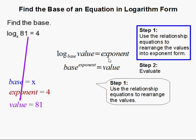So basically what I did is I just looked at this and rewrote the values over here, so that then I could stick them back into the exponent equation. The base now is x, the exponent of the base is 4, and then the value is 81.